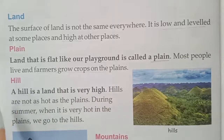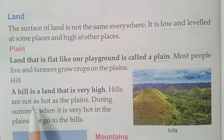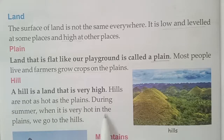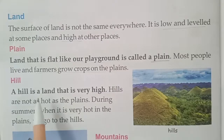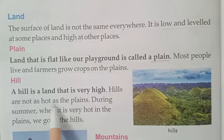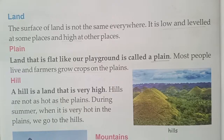See this hill. A hill is land that is very high. Hills are not as hot as the plains. During summer, when it is very hot in the plains, we go to the hills. Hills are cool and pleasant in summer, so people usually go to hills during the summer season.